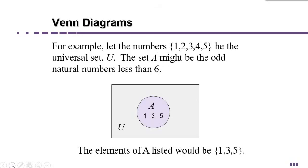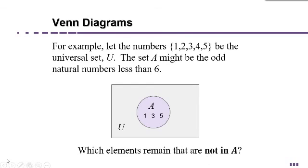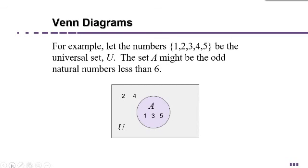Now which elements remain that are not in A? They're in our universal set U but they're not in A. Which ones are left? Very good—2 and 4. Not 6, because 6 is actually not in the universal set. If you notice, the universal set only goes up to 5. So I'm going to put 2 and 4 on the outside of A.